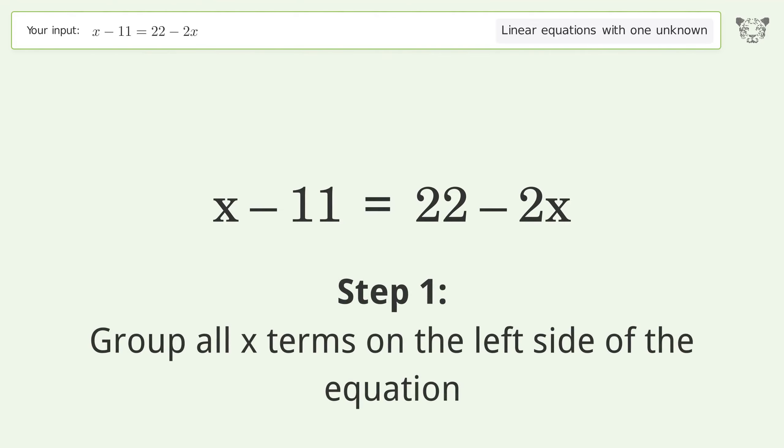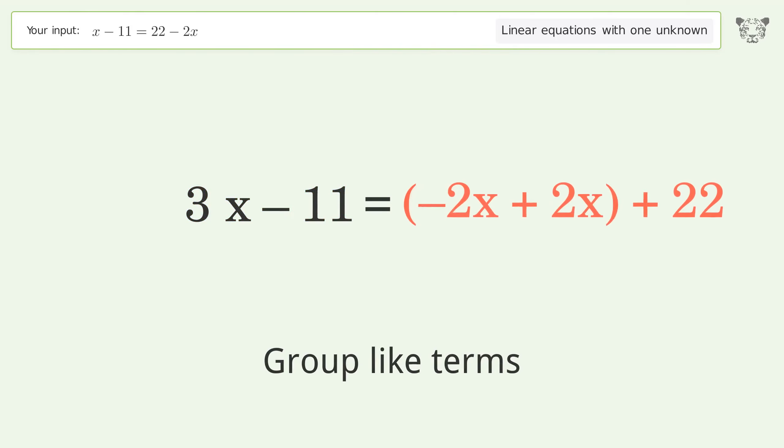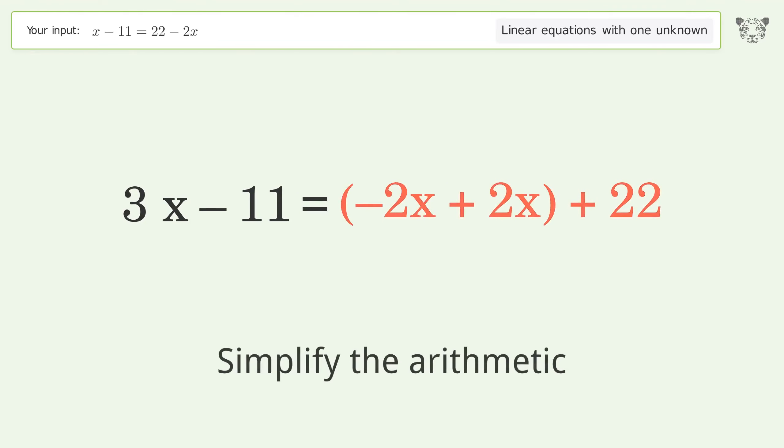Group all x terms on the left side of the equation. Add two x to both sides. Group like terms and simplify the arithmetic.